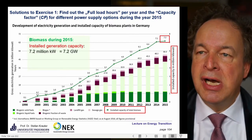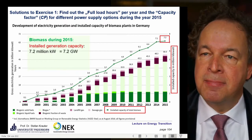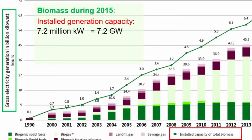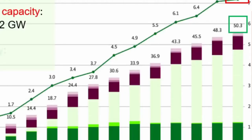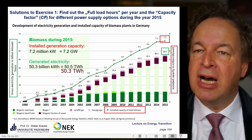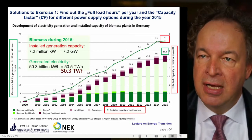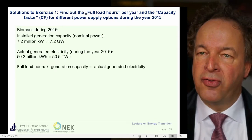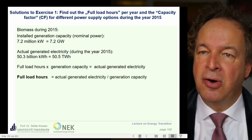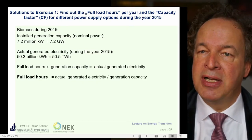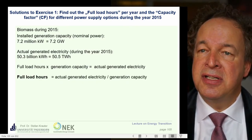Now we want to know the actual generated electricity, which you find on the left side here. That's the electricity in billion kilowatt hours. We find a number of 50.3 billion kilowatt hours. We already know from the table that full load hours times generation capacity equals actual generated electricity, or the other way around: full load hours equals actual generated electricity divided by the nominal generation capacity.